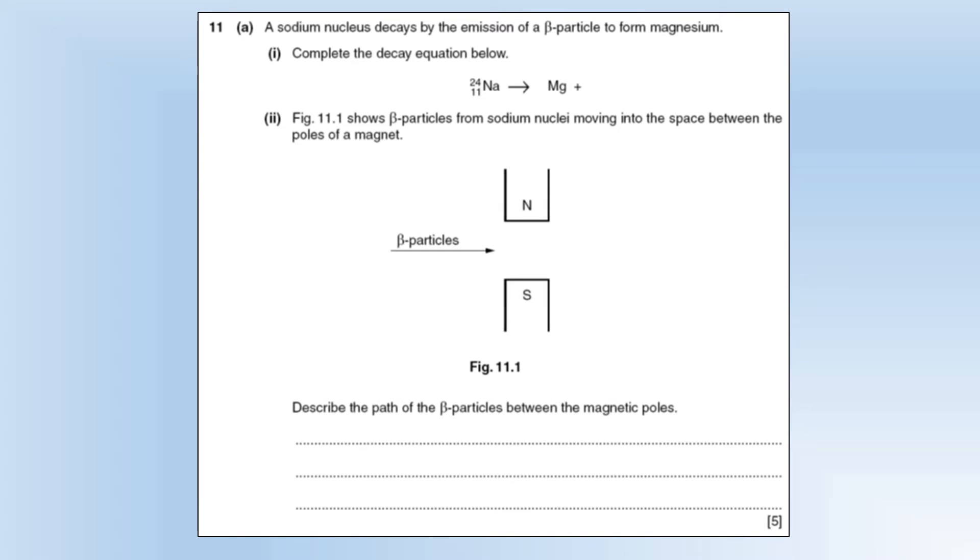So a sodium nucleus decays by the emission of a beta-minus particle to form magnesium. Complete the equation. Well, this is magnesium. Beta-minus increases the proton number by one. It doesn't change the nucleon number. And then we have the beta particle as well.